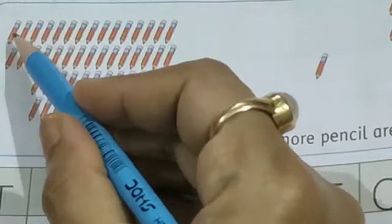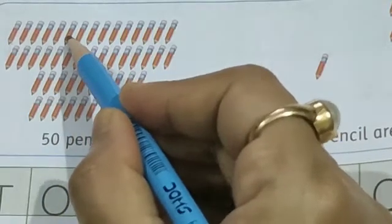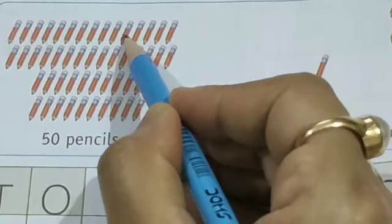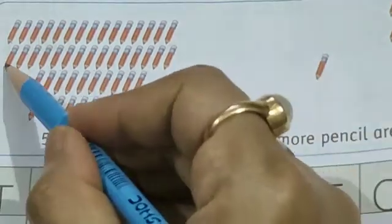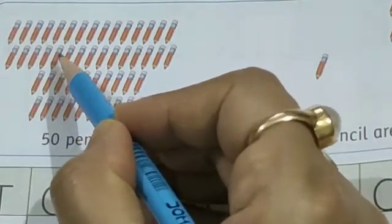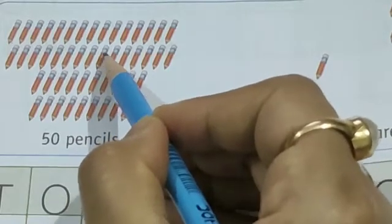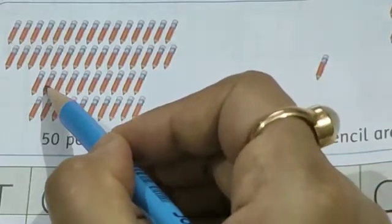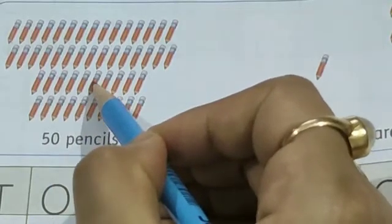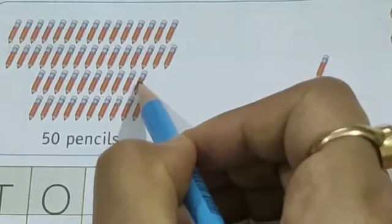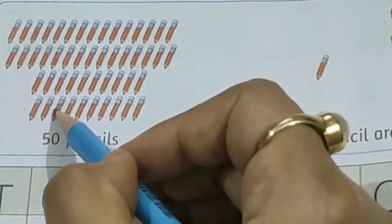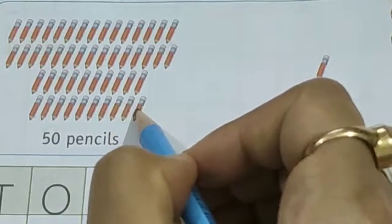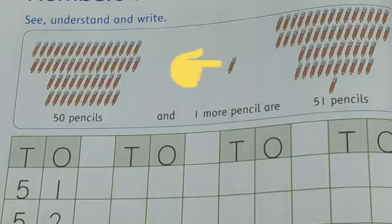Let's count. 1, 2, 3, 4, 5, 6, 7, 8, 9, 10, 11, 12, 13, 14, 15... continues counting... 46, 47, 48, 49, 50. 50 pencils. And children, here you can see one more pencil. 50 pencils and one more pencil are.